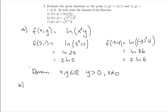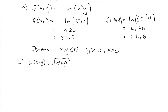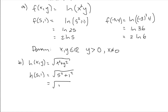The next function is h of x, y equal to the square root of x squared plus y squared. First, they'd like us to evaluate this at (5, 1). So h(5, 1) equals the square root of 5 squared plus 1 squared, which is the square root of 25 plus 1, which is the square root of 26. I'll just leave it like that.